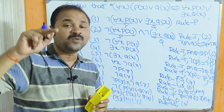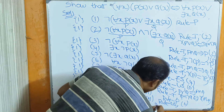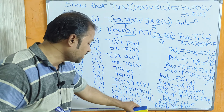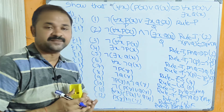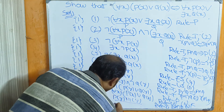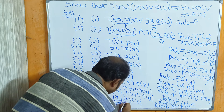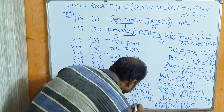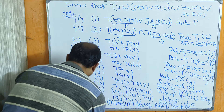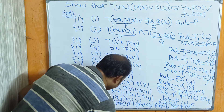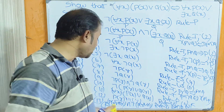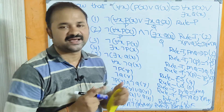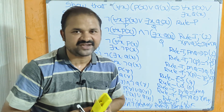Now we have P(y) or Q(y) as statement formula 12, and negation[P(y) or Q(y)] as statement formula 10. These are in the form P and negation P. Using rule T — P and negation P equals false — we obtain false as the result, which is a contradiction. Since we produced a contradiction, we have proven that the left-hand side equals the right-hand side. In this way we can solve this problem using the indirect method of proof.